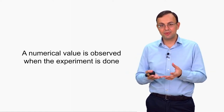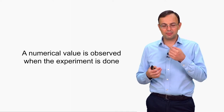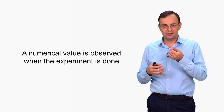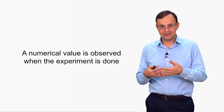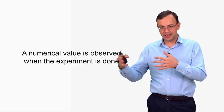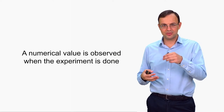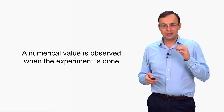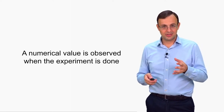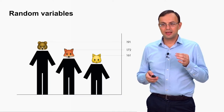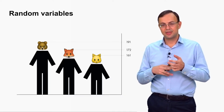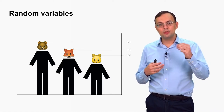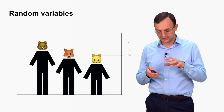This numerical value depends on the outcome of the experiment. For example, if I have five students and the value I'm observing is the height of the chosen student, the particular number I will get depends on whom I will choose — it depends on the student that is chosen, depends on the outcome of the experiment. Such numbers are called random variables. A random variable is a number whose value depends on the outcome of the experiment.